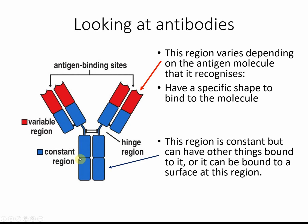At the other end of the antibody, there's a region that is always the same in all antibodies, and this region can have things bound and attached to it. For example, it could be a drug or a radioactive chemical used to treat a disease. When you find out more about the uses of monoclonal antibodies, you can explore that further.